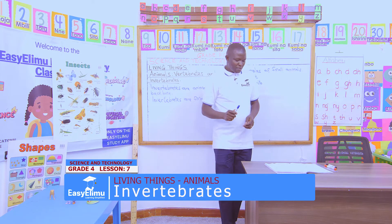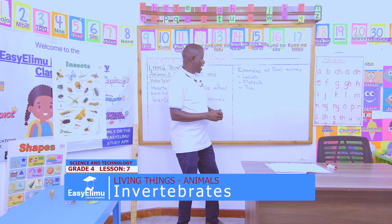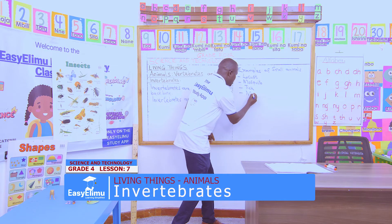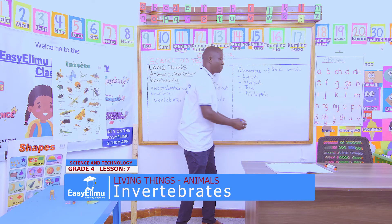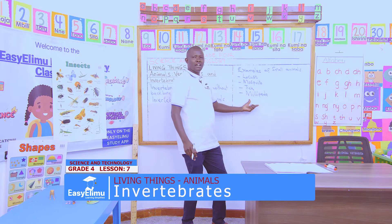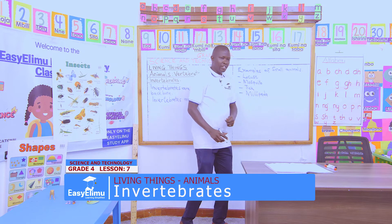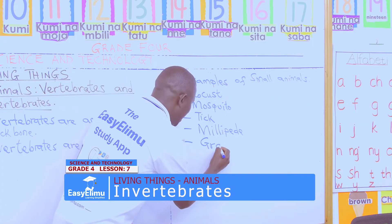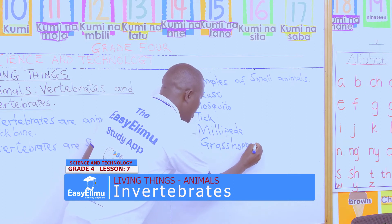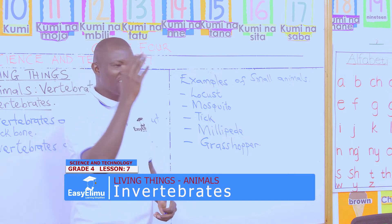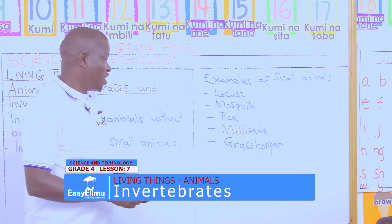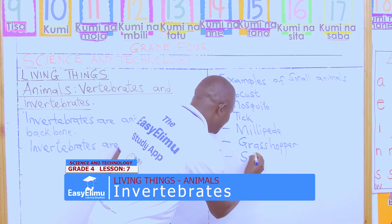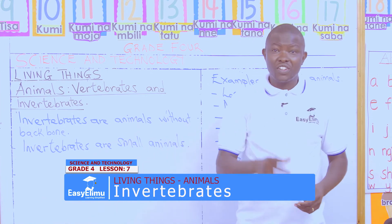Wangari says the first animal she has identified without a backbone is a millipede — correct, millipede is categorized as an invertebrate. Jane reminds us of grasshopper — grasshopper is also an animal without backbone. Victoria says spider — spider is another example. All these answers are correct.